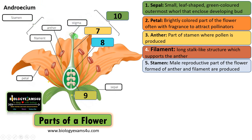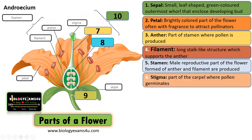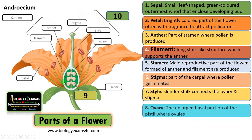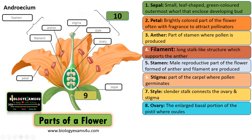The fourth whorl of the flower is the female reproductive unit which is called the gynoecium. This is the stigma — the part of the carpel where pollen germinates. Then this is the style, the slender tube that connects stigma to the ovary. Ovary is the enlarged basal portion of the carpel where ovules are present.